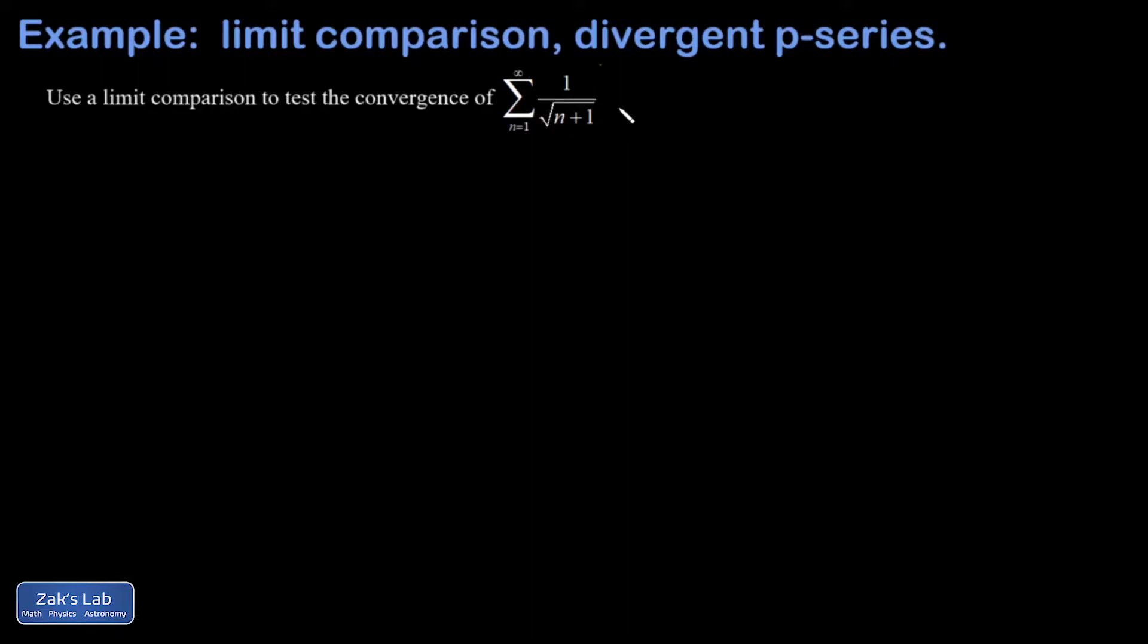Now the reason we can't do a direct comparison is these terms are a little bit smaller than the terms of this series because the denominator is a little bit bigger. This series is divergent. That's a p-series with p equals one half.